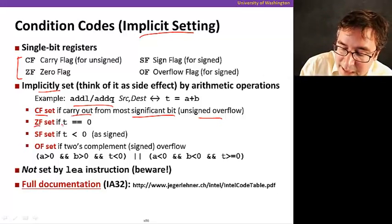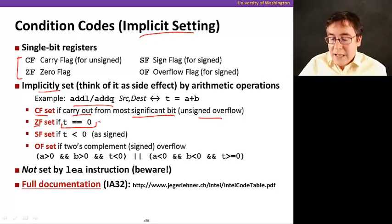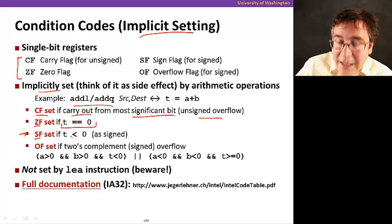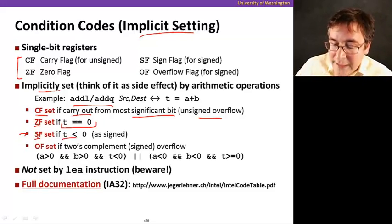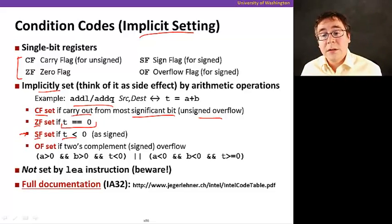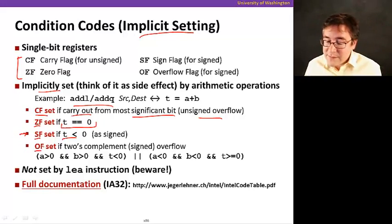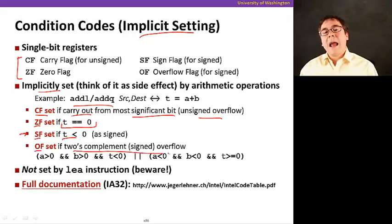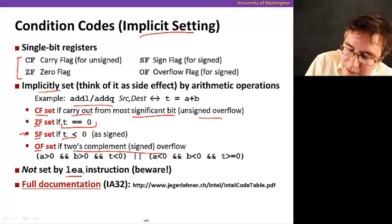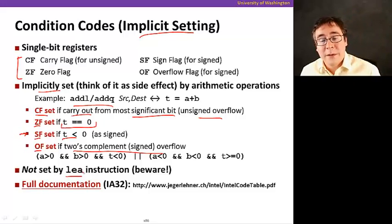The sign flag SF is set if the result is negative. OF happens if there's a two's complement overflow, so if when you add, the number is bigger than what fits in the register. Be careful if you use the LEA instruction that computes arithmetic expressions, you do not set these condition codes.